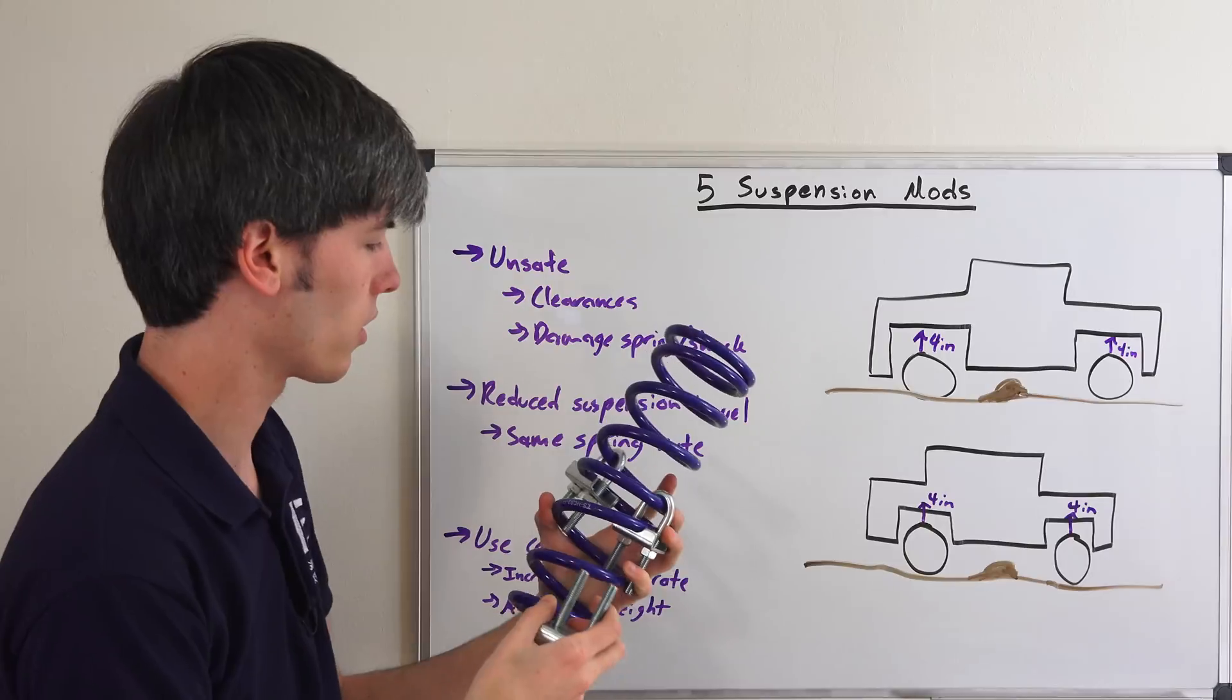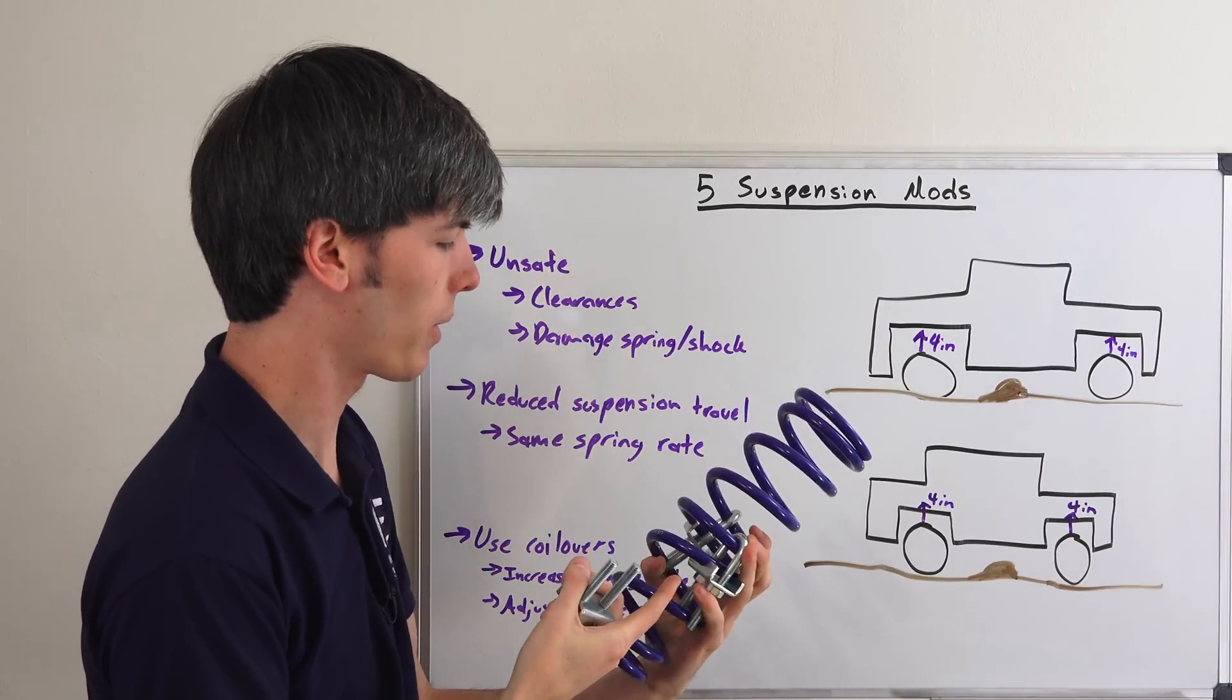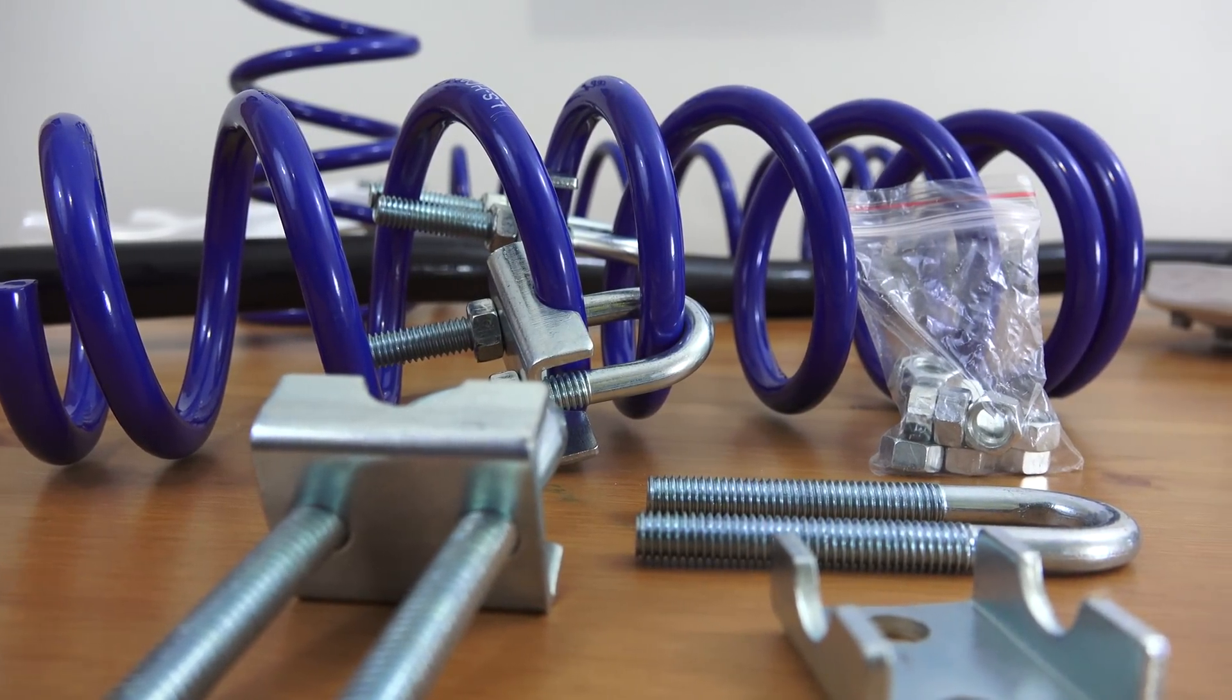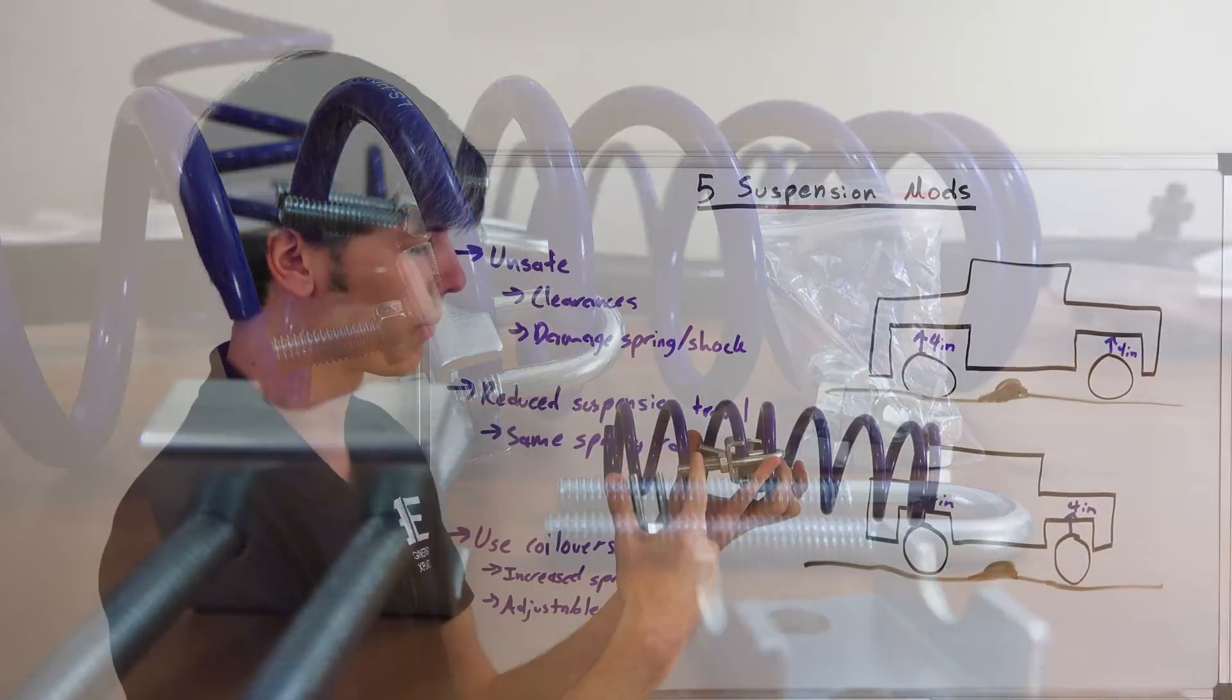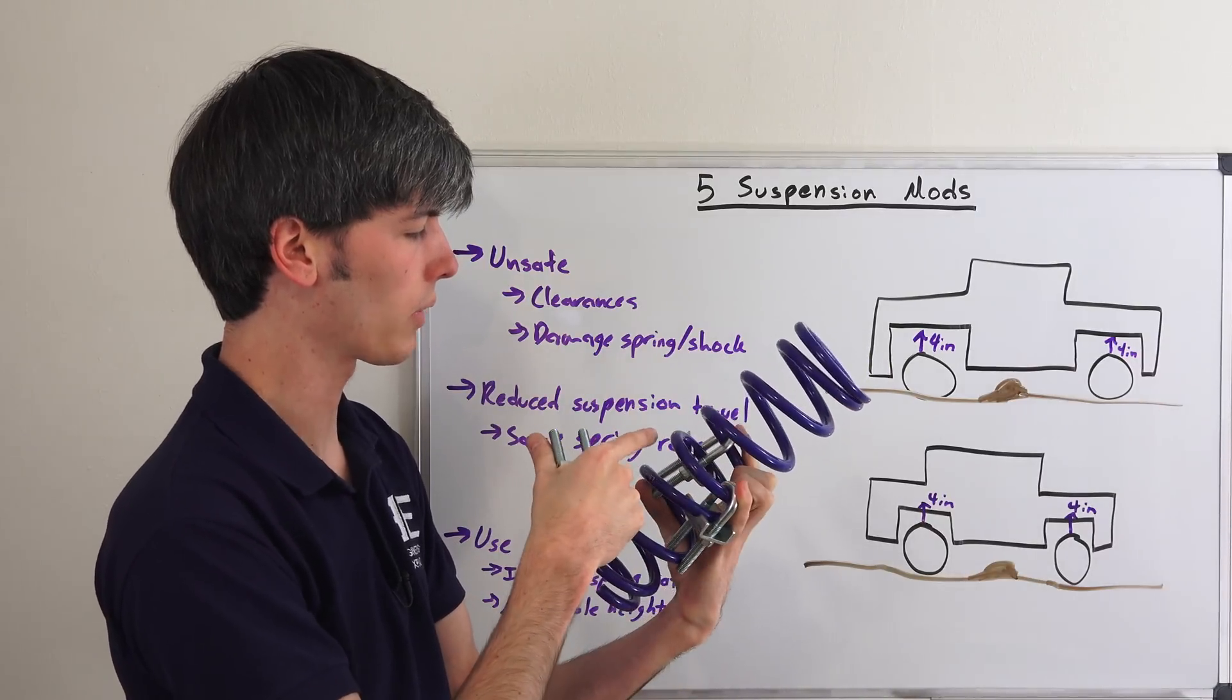This is crazy for several reasons. The first thing that comes to mind is just safety. These are interfering with the spring, they can come into contact with it, they can wear down on it. You could trim the ends of these bolts so you have better clearance, but regardless this can come into contact with your shock.